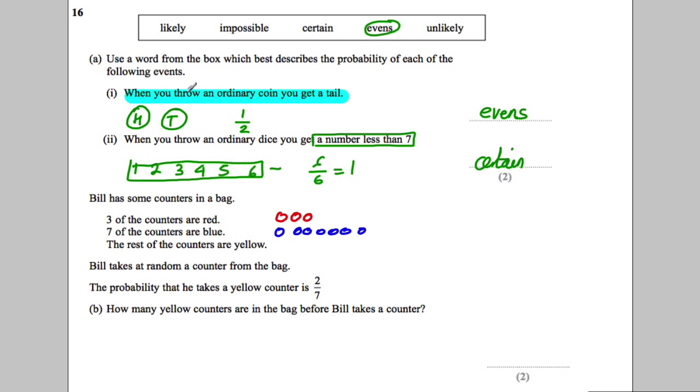The probability that he takes a yellow counter is two out of seven. So how many yellow counters are in the bag before Bill takes a counter? He's got three red, seven blue. The rest are yellow, so we don't know how many are yellow. We know we've already got more than seven balls in the bag.